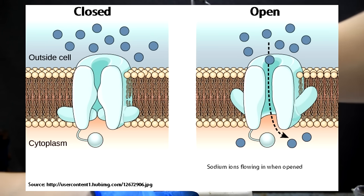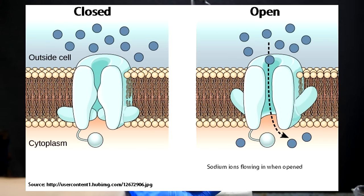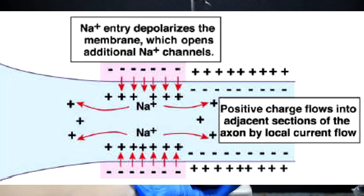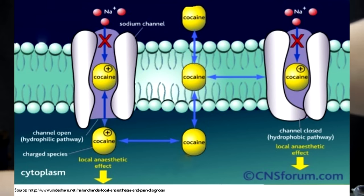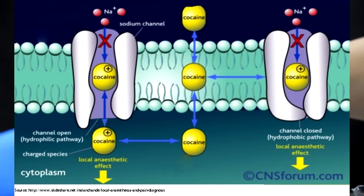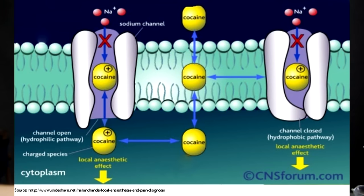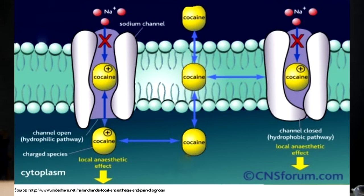When the nerve cell wants to send a signal, it opens little things called sodium channels and allows sodium ions to diffuse into the cell. This happens really quickly and ultimately leads to a signal being sent. The local anesthetic basically just blocks the sodium channel — when the nerve tries to send a signal, no sodium comes in and no signal is sent. This leaves your nerve cell with no means of communication, and we sense this as the feeling of being numb.